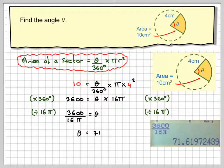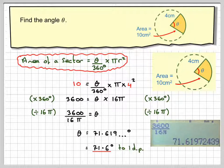So 71.619 degrees, and we round that off to one decimal place to get an answer of 71.6 degrees.